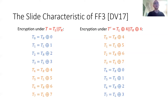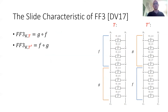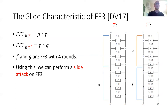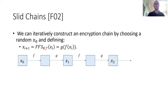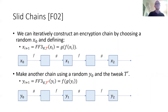If we look at it a bit differently, we can define these halves as functions F and G, such that encryption under T is equal to performing F and then G, where note that both F and G are each FF3 with 4 rounds. So using this, we can mount a slide attack on FF3, where the purpose of the slide attack is to find input-output pairs for F and for G. In order to do so, we will need something called slid chains, which was presented by Faroe in 2002. Slid chains are iterative encryptions, meaning we choose a random starting point X0 and iteratively encrypt it in order to create a chain. We can do the same thing for the related tweak, from a random starting point Y0. Note that the chains are both alternating functions of F and G; however, we do not know the intermediate states between F and G.